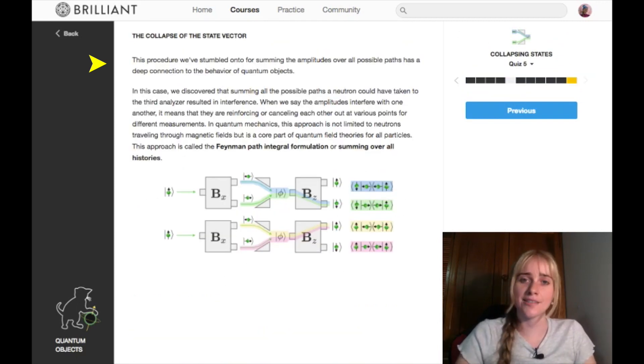And that really gets into the heart of what is called the Feynman path integral, or summing over all histories. Now the Feynman path integral is often represented in many different ways. You might have seen it or you might come to see it represented as an exponential or relating to an integral of the action of a system. But this is a way that we can see a glimpse of how it's working. We discovered that summing all the possible paths a neutron could have taken to the third analyzer resulted in interference. When we say that amplitudes interfere with one another, it means that they are reinforcing or cancelling each other out at various points for different measurements.